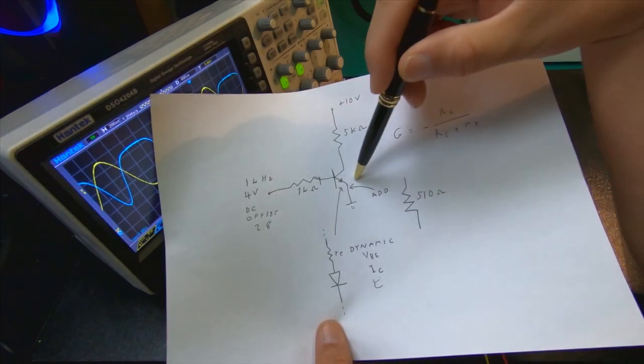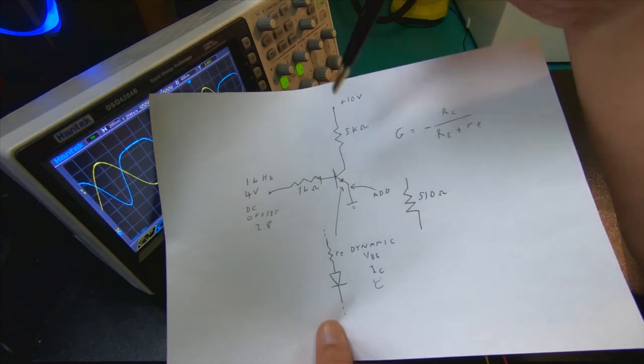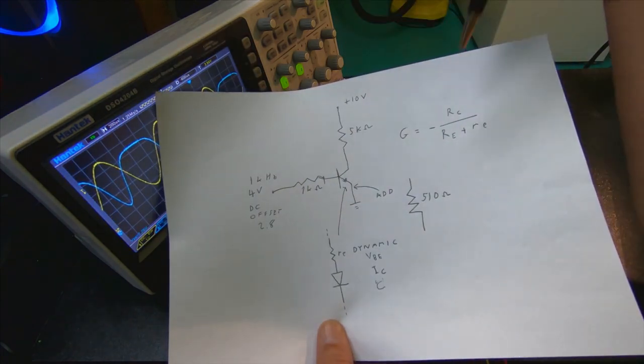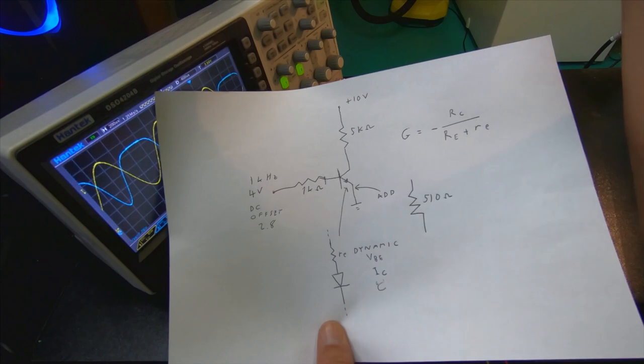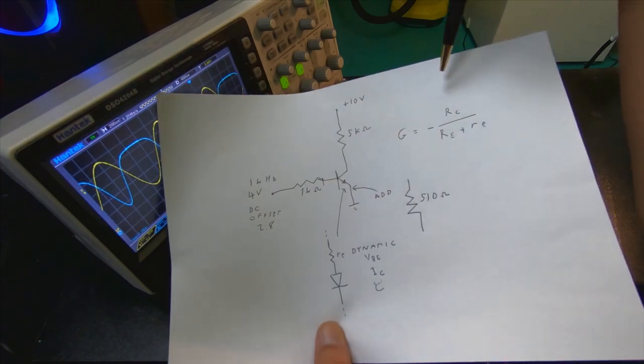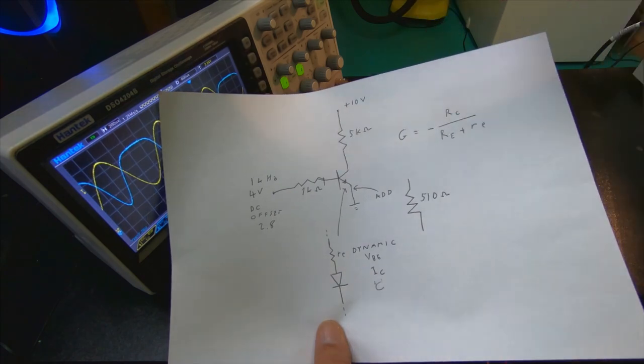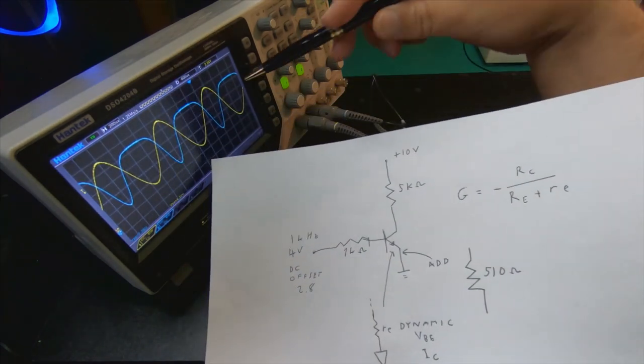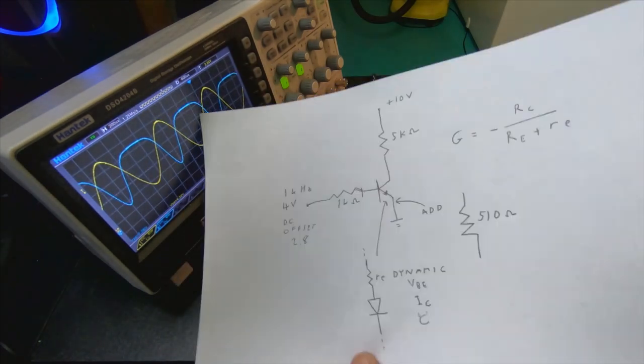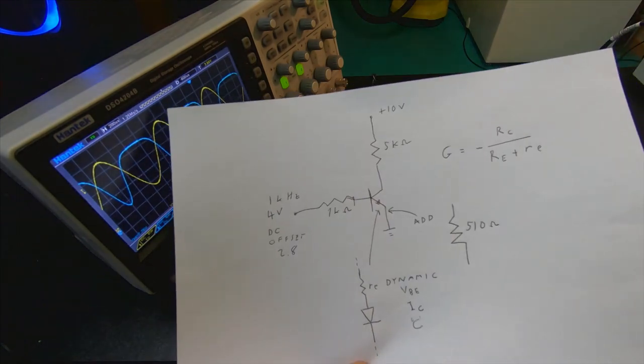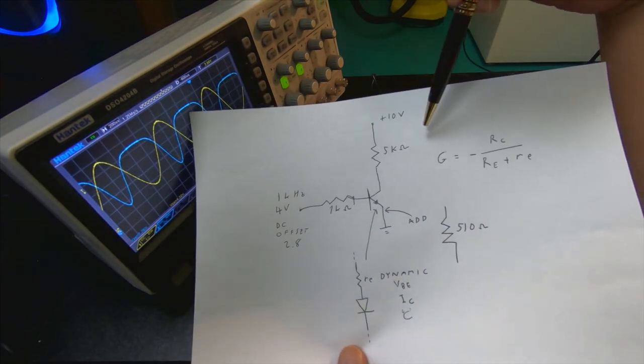Because this small hidden resistor can be like 10 ohms around, somewhere around there. So you have 5 kilos to 10 ohms, then you get a very big gain, and the big gain leads to bad gain distortion.